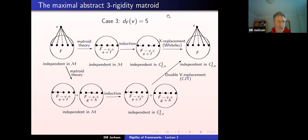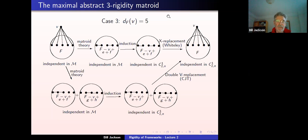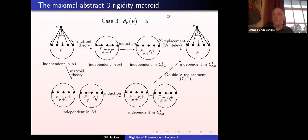There are also algorithmic questions: can you determine whether a given graph is independent in the canonical cofactor matroid? Tomorrow I'll address this — we have a good characterization of the rank function. I can give a certificate of dependence using our characterization of the rank function, and a certificate of independence by giving a special position independent realization. But we don't have an algorithm based on our characterization of the rank function which would determine independence in polynomial time. That's a big open problem.